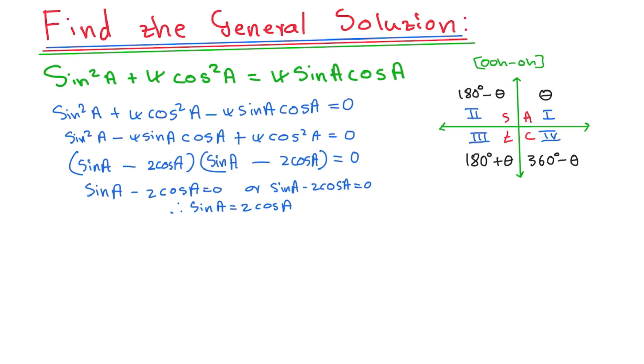Now, because I have sin and cos on either side, I will always, always, guys, divide by cos. Cos has to be a denominator for you to get a tan. Why? Because tan A is equals to sin A over cos A. So cos has to always be a denominator. So that's why you have to divide by cos all the time when you want tan. So I'll say sin A over cos A is equals to 2 cos A over cos A. And the cos and cos will cancel each other.